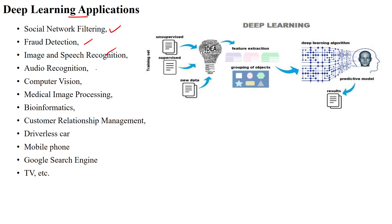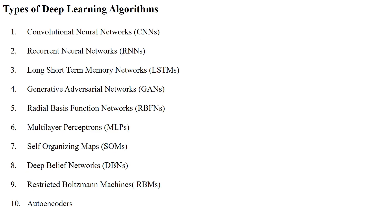Deep learning is applied for social network filtering, fraud detection, speech recognition, image recognition, audio recognition, computer vision, medical image processing, and bioinformatics. In real time, it can be applied for autonomous cars, mobile phones and search engines, televisions, and more.